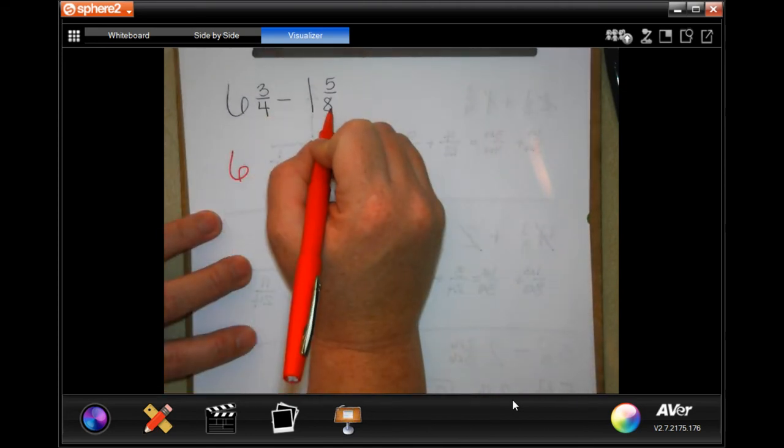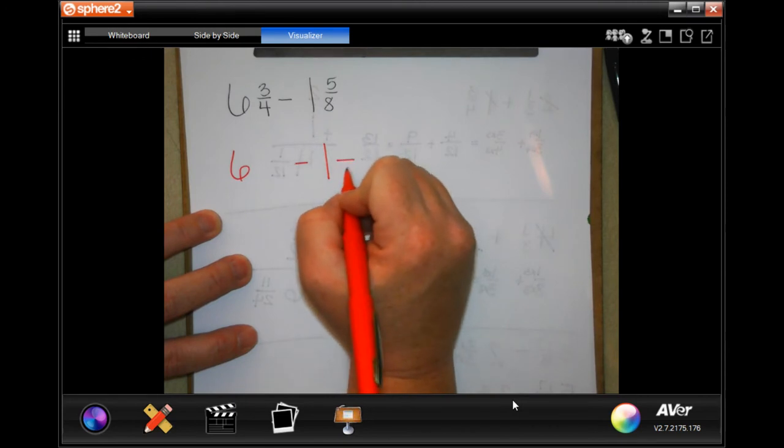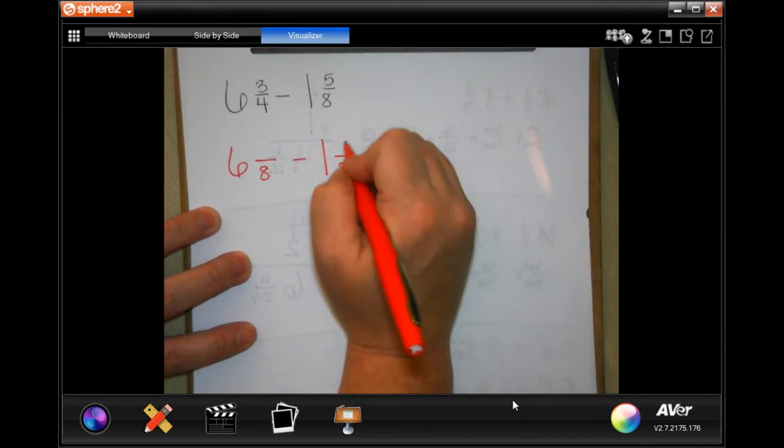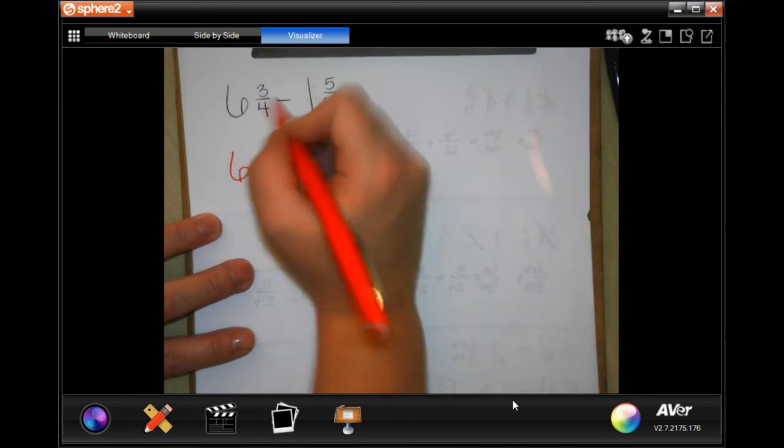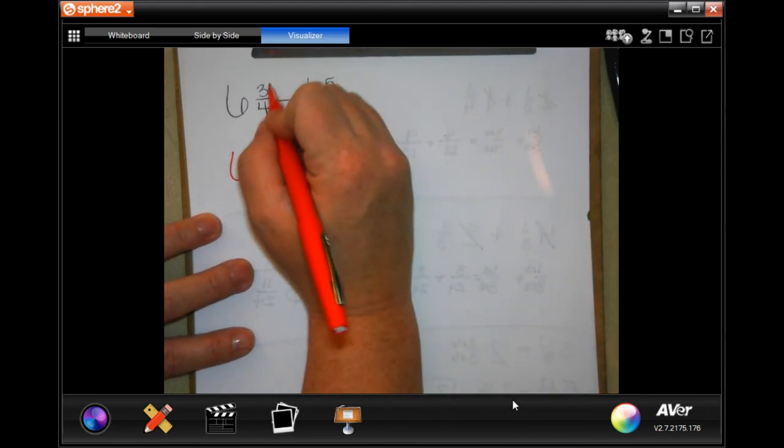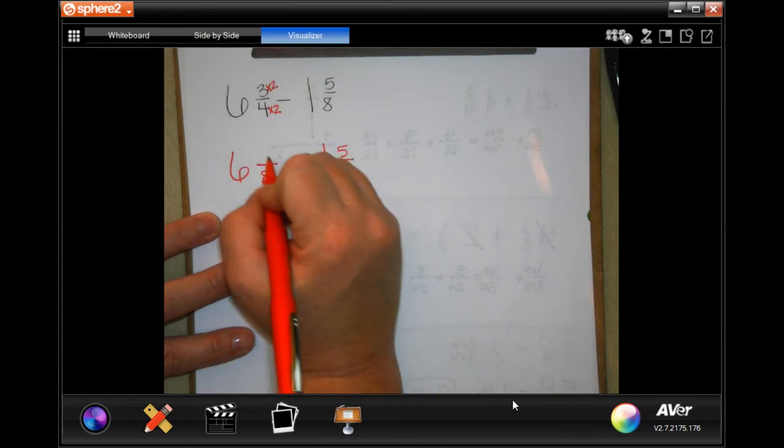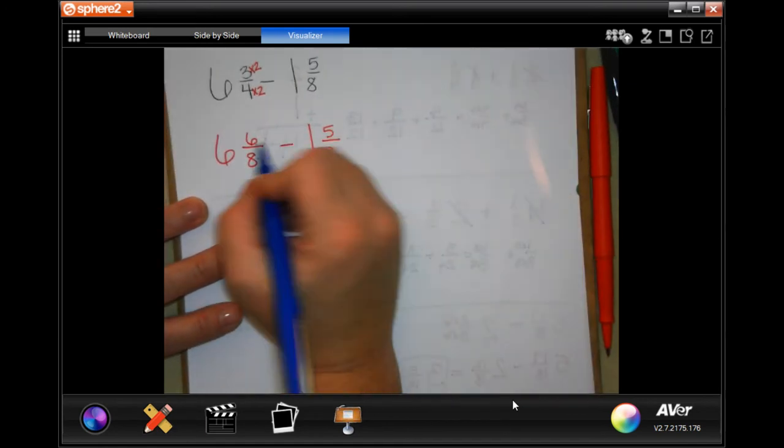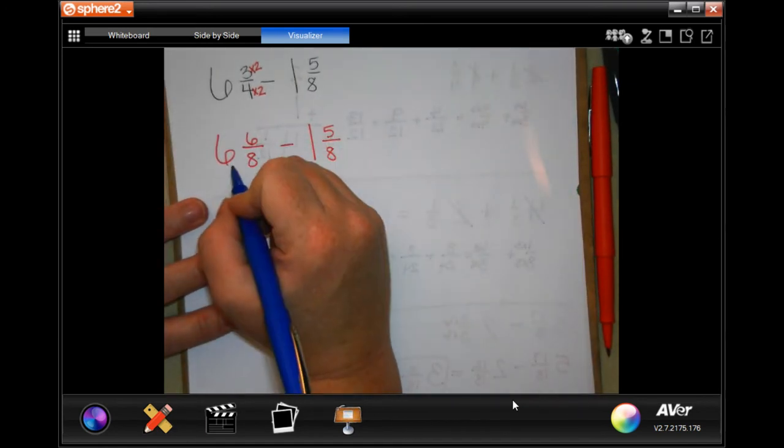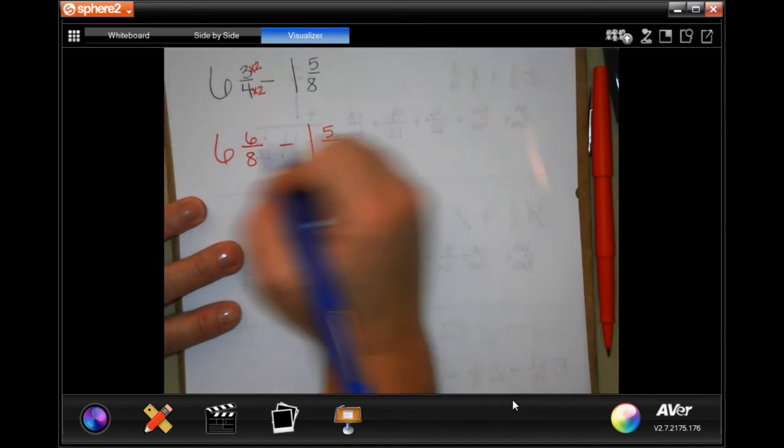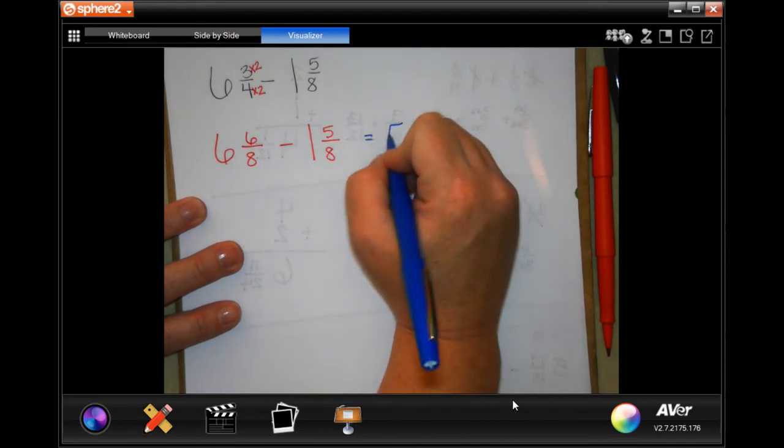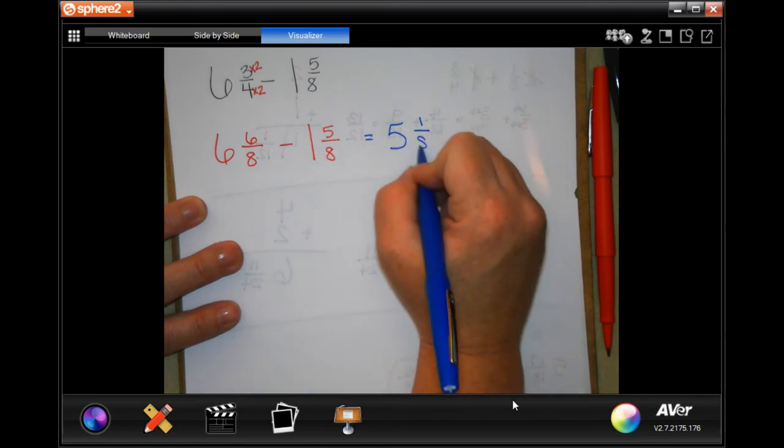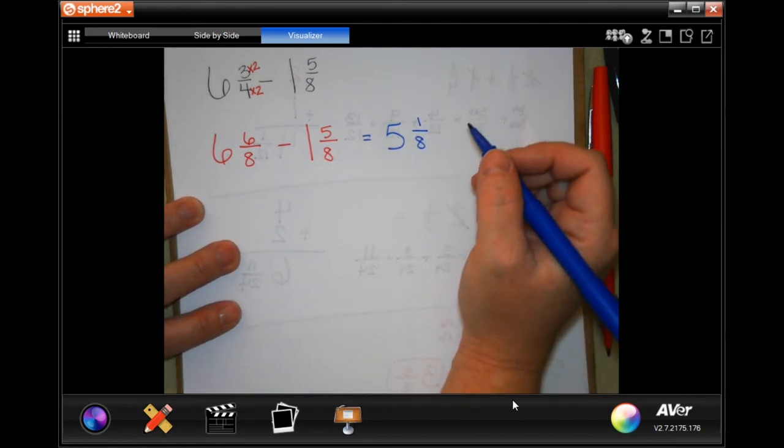Smallest number that 4 and 8 are both going to go into is going to be 8. Well, this one's already 8. So I'm going to rewrite my 5. 4, I had to multiply by 2 to get to 8. So when I multiply the 2 by that 3, I get 6. So 6 can take away 5. So I'm going to go ahead and subtract my whole numbers first. 6 take away 1 is 5. 6 minus 5 is 1. And my denominator stays the same.